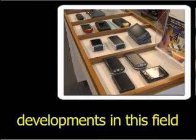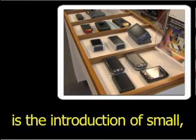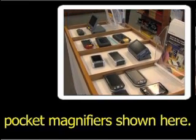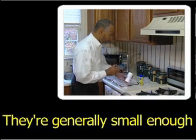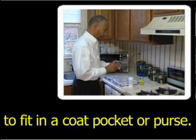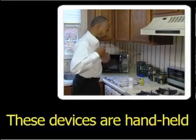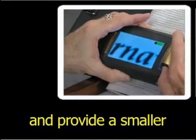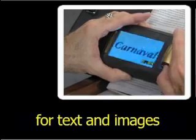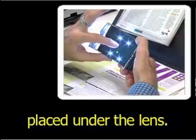One of the more recent developments in this field is the introduction of small, lightweight electronic pocket magnifiers shown here. They are generally small enough to fit in a coat pocket or purse. These devices are handheld and provide a smaller range of magnification for text and images placed under the lens.